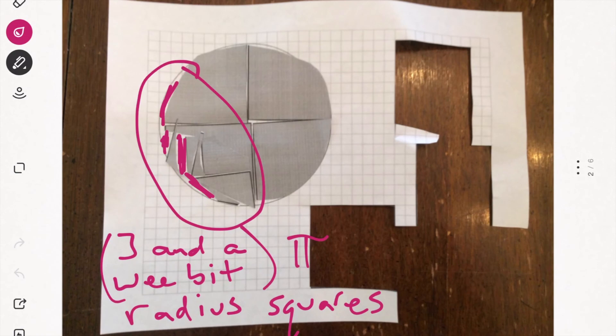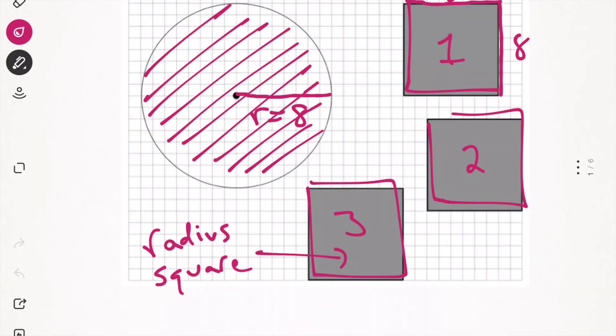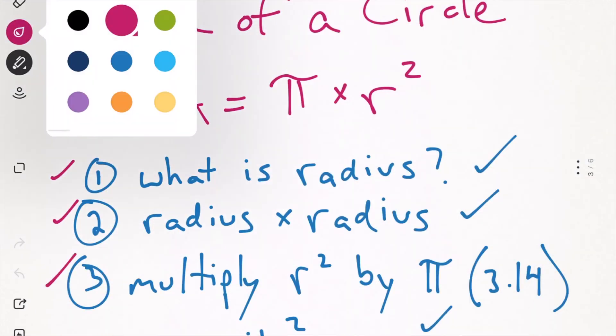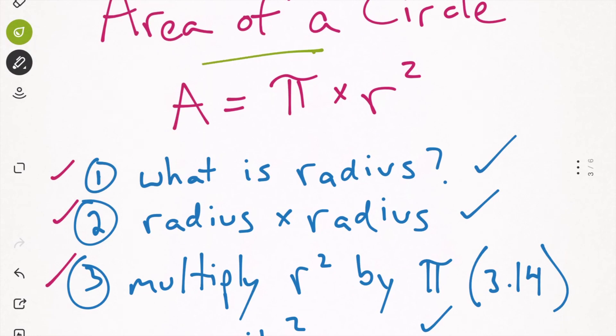And let's look at why that is again. Because if we take three radius squares and try to fill in the inside of the circle, it's not quite enough. As we saw from my daughter's example here, we need three and a wee bit more radius squares to fill in the circle. And that's where we get this formula. Area of a circle is pi times the radius squared.